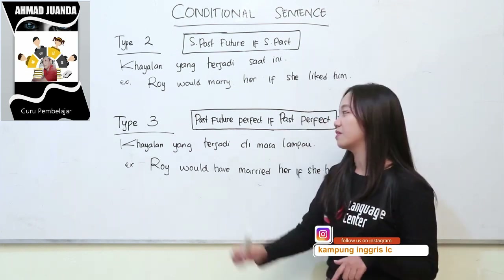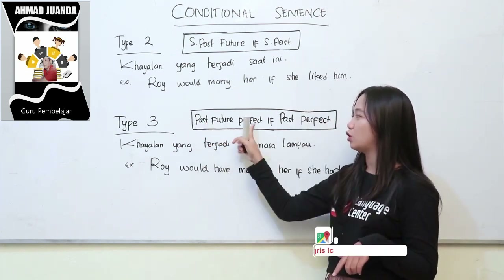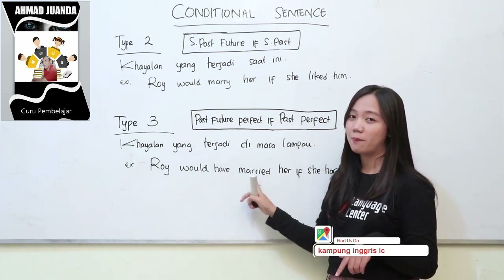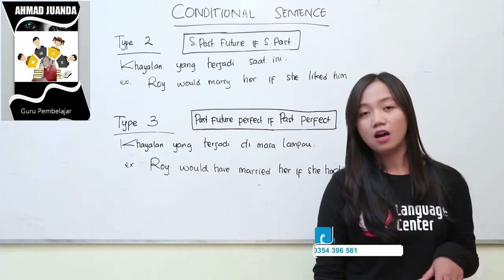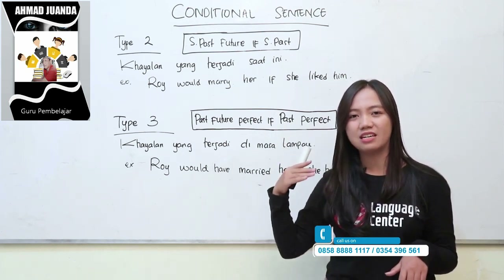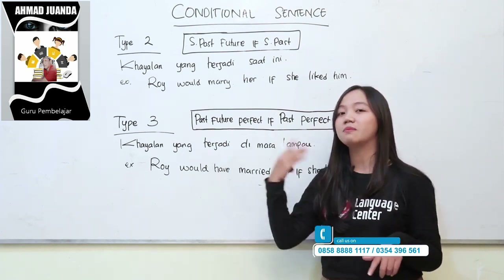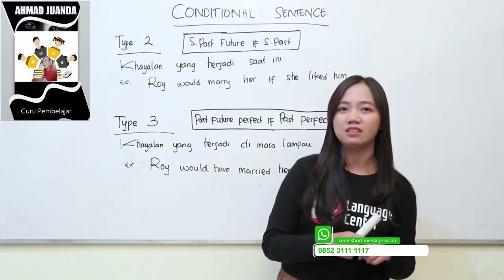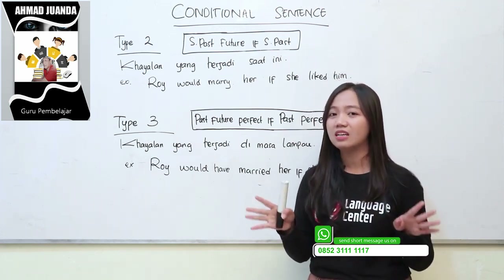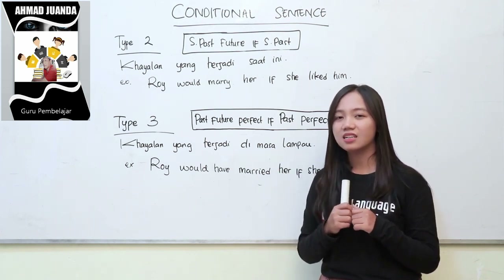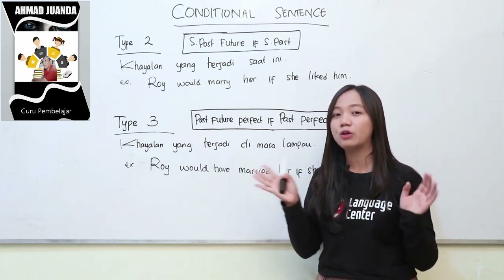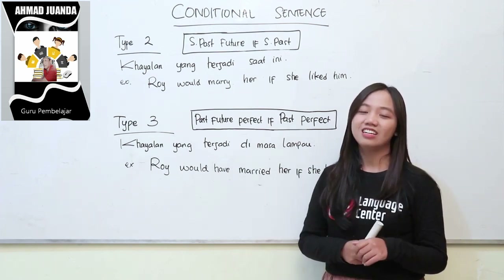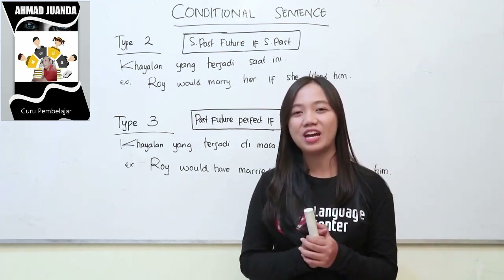Sedangkan di type 3, teman-teman, hayalan terjadi di masa lampau. Dia pakai past future perfect, if past perfect. Contoh yang sama: Roy would have married her if she had liked him. Roy dulunya akan sudah menikahi dia perempuan kalau dia perempuan juga menyukai si Roy. Perbedaannya: kalau type 2, ibarat kata Roy dan si perempuannya sekarang masih sama-sama muda tapi mereka nggak menikah. Sedangkan di type 3, ibarat kata Roy dan perempuan ini udah umur — dia menceritakan kejadian di masa lampau, penyesalan yang terjadi di masa lalu banget. Itu adalah perbedaan conditional sentence type 2 and type 3.